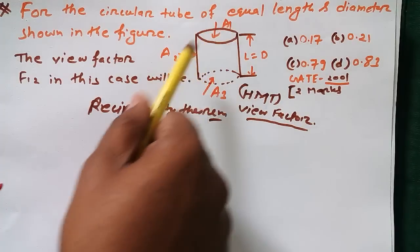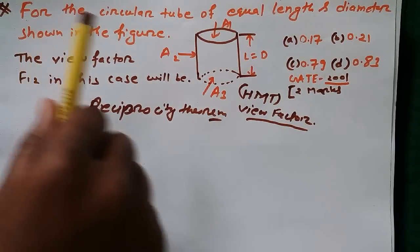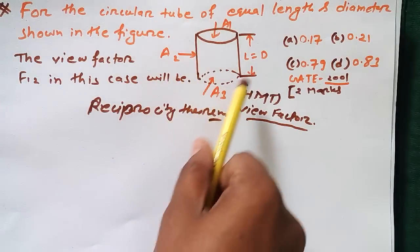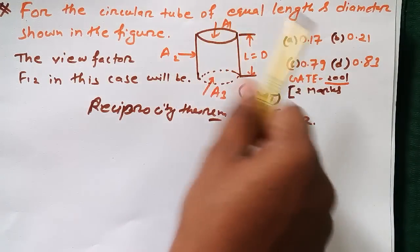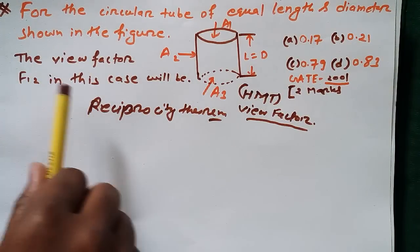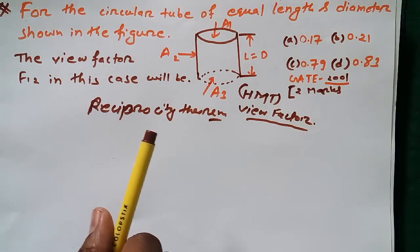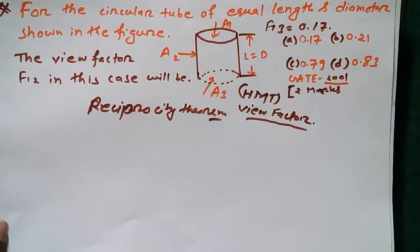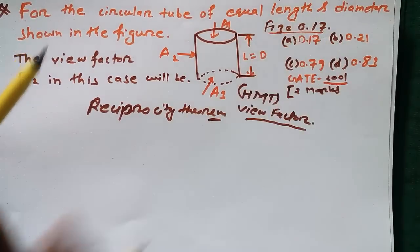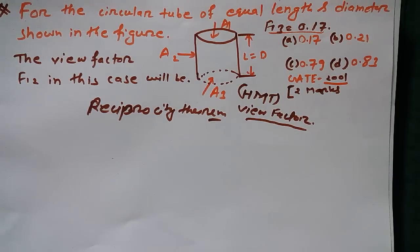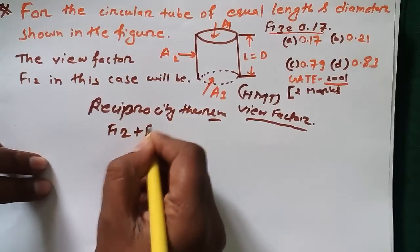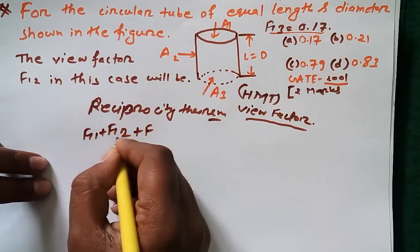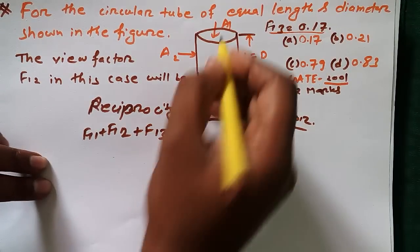Let me read this question: for the circular tube of equal length and diameter as shown in the diagram, the view factor F12 will be — given that F13 is equal to 0.17. There is a theorem in view factor that says the maximum value is 1, so we can write: F11 + F12 + F13 = 1.